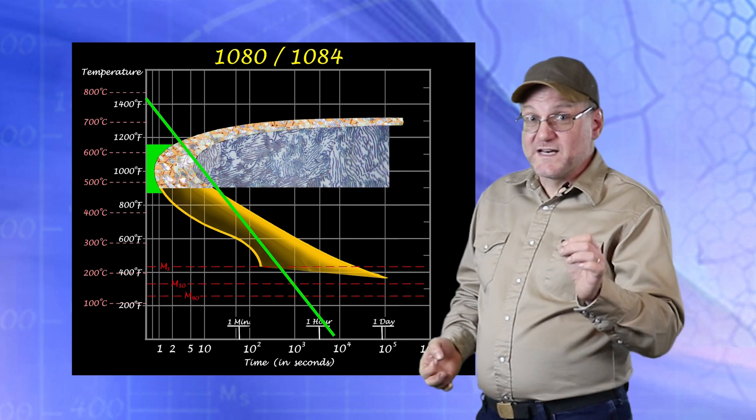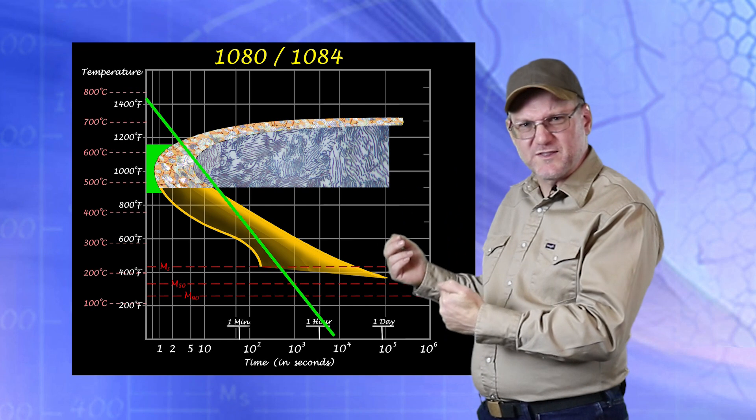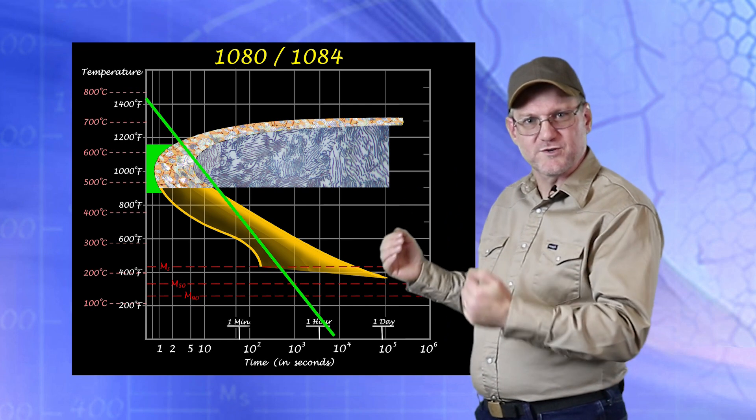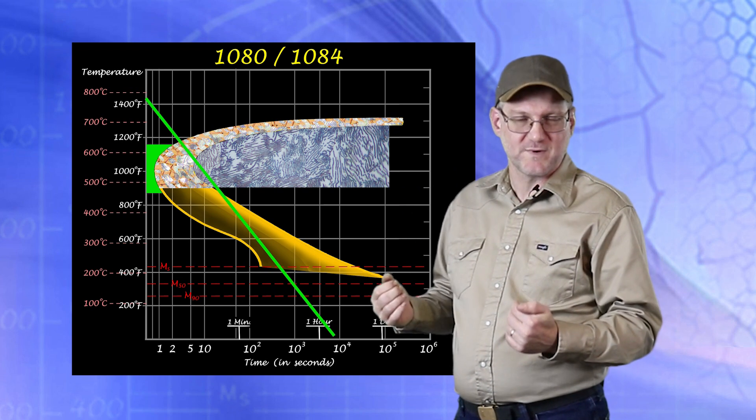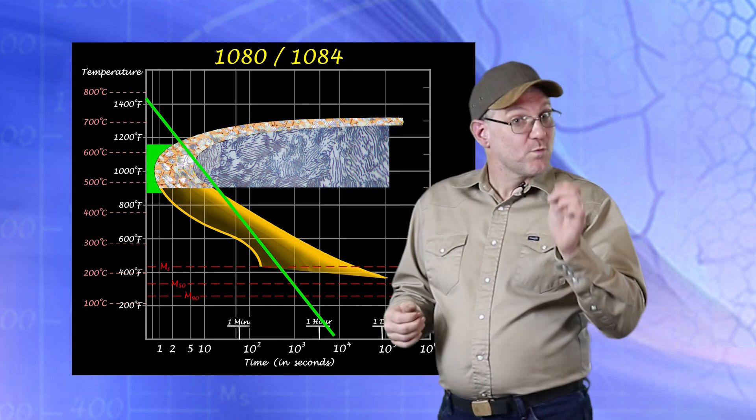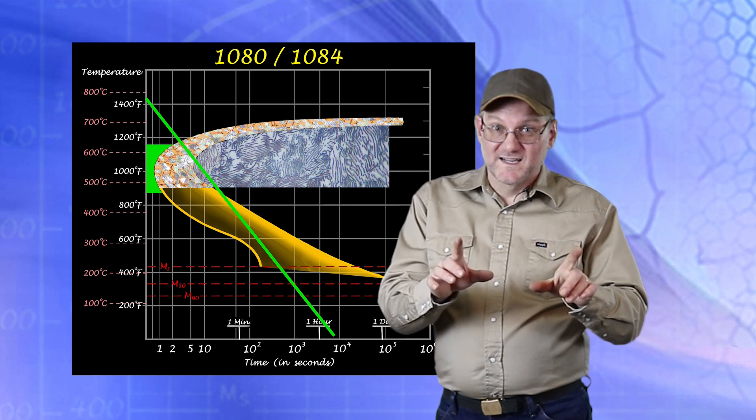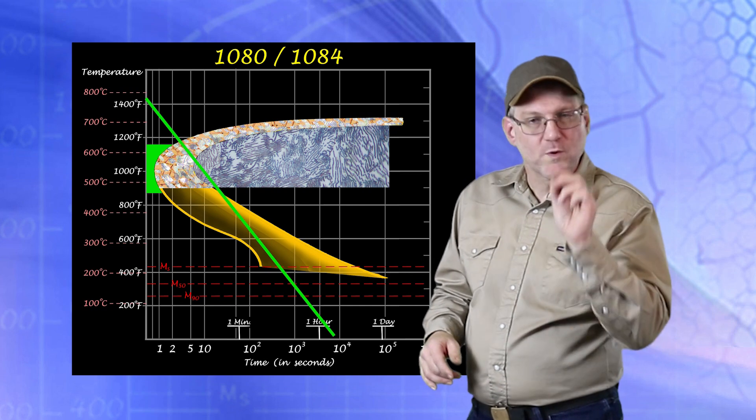When we lamellar anneal, we intentionally pass as slowly through this temperature in order to allow complete transformation to perlite. This is what we do when we want soft steel.